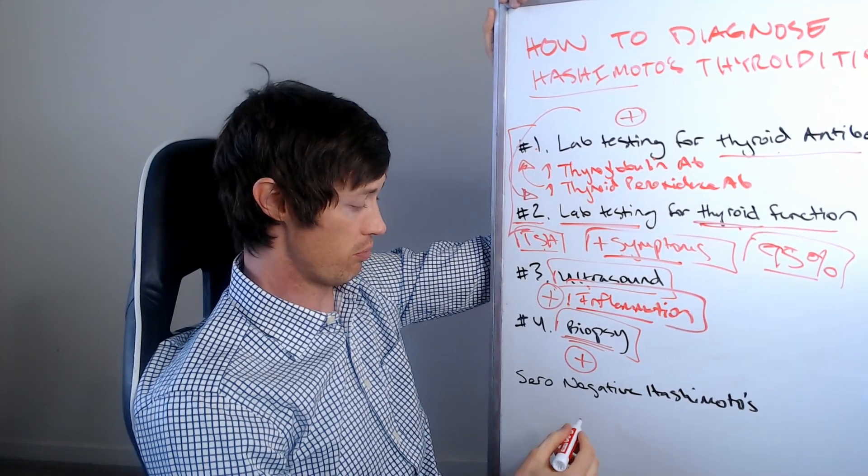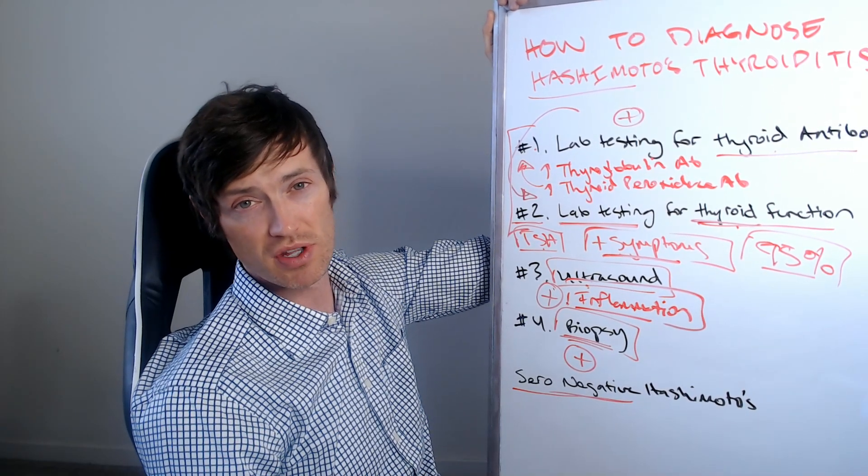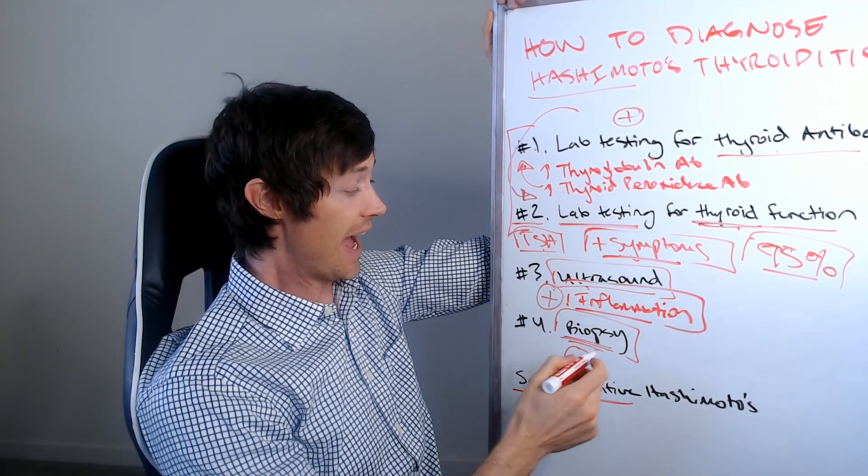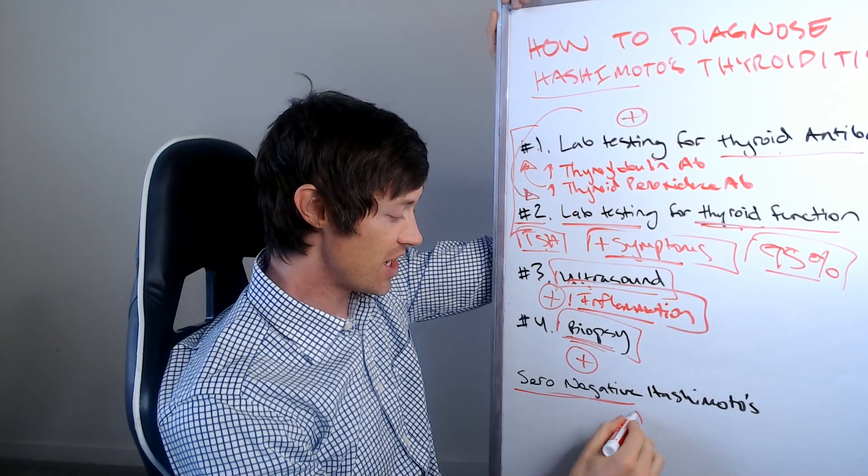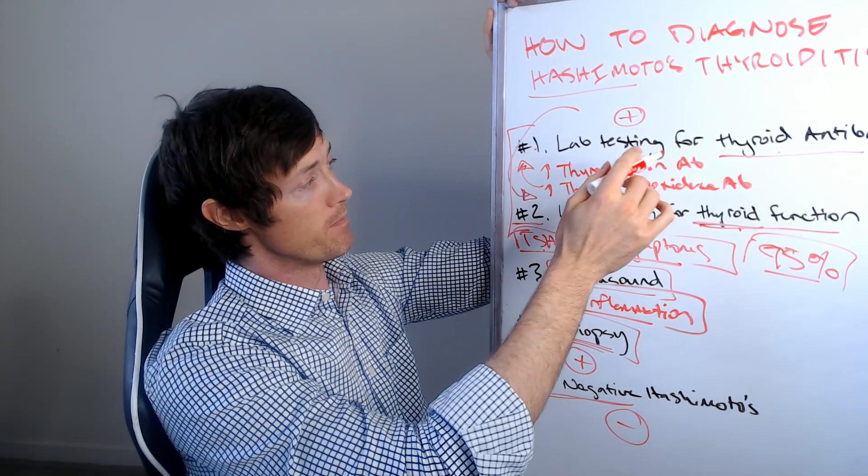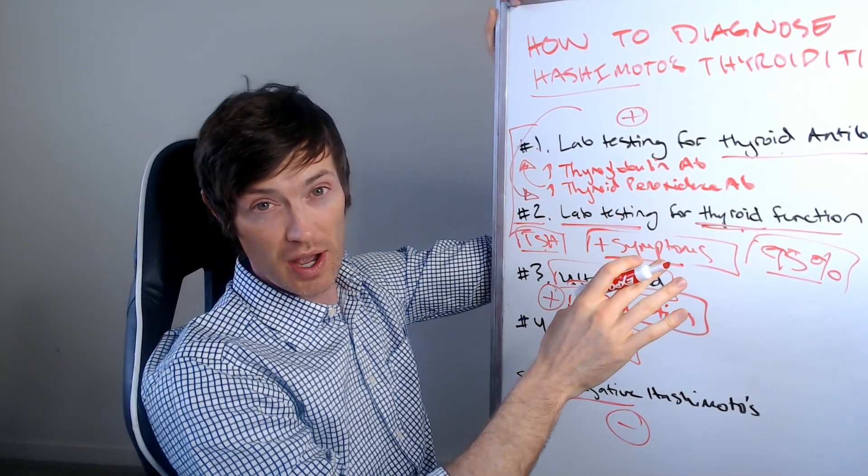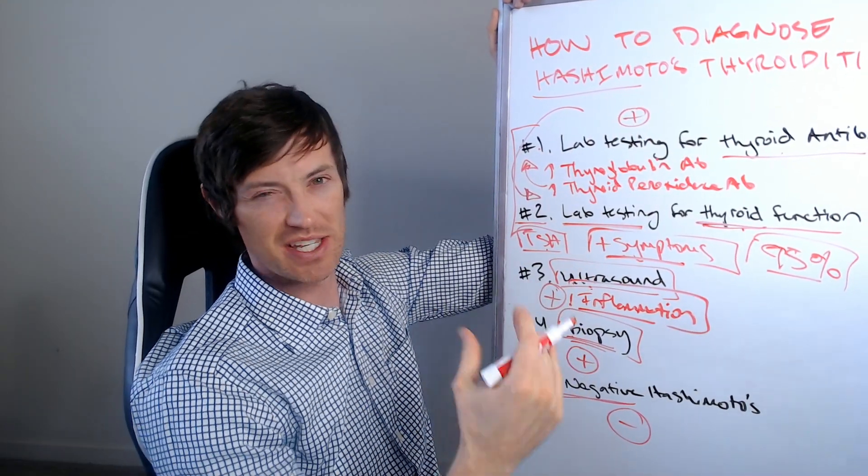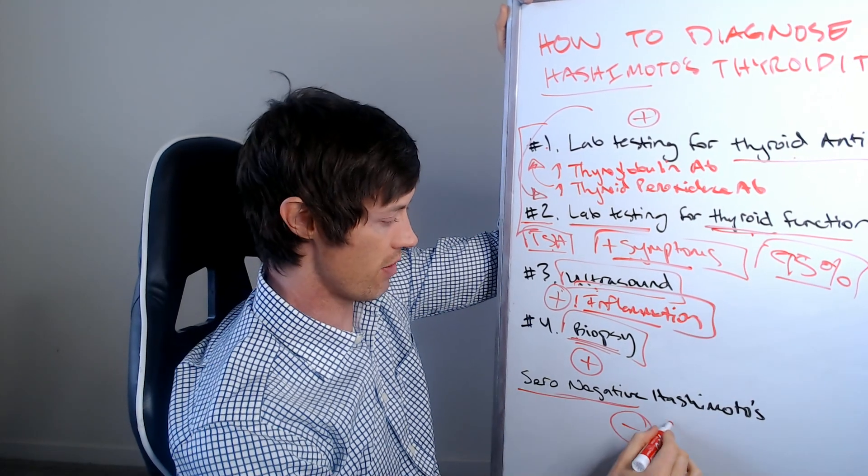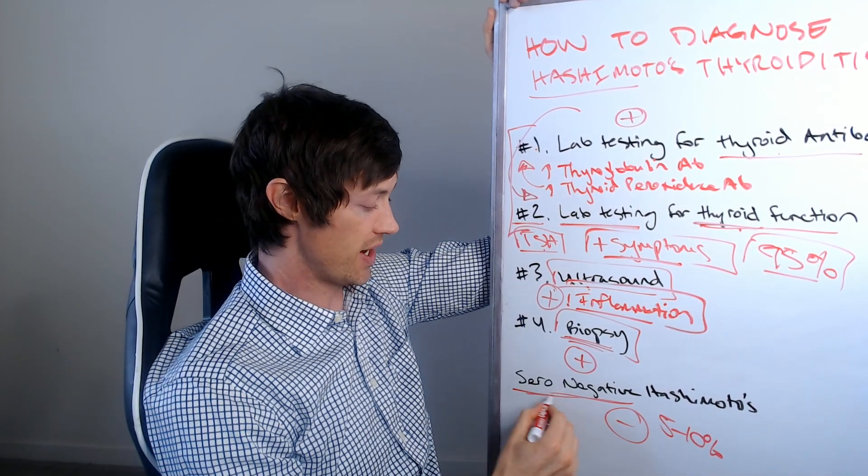There's one other thing that I want to point out, which is important to talk about here. And that is this idea of seronegative Hashimoto's thyroiditis. What this refers to is that you can actually have Hashimoto's thyroiditis as evidenced by a biopsy or an ultrasound, and yet you have negative thyroid antibodies. So this number one option that we talked about before, where I said almost everybody has positive antibodies. There are some people who have Hashimoto's, but they have negative thyroid antibodies. So it just makes it a little more confusing. The good news is if you are one of those people, first of all, it's rare. Five to 10% of people have this seronegative Hashimoto's.